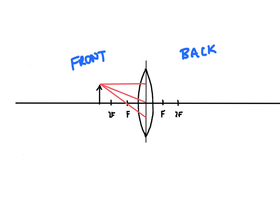With lenses we still want to think about real and virtual images. A real image means it can be projected onto a screen — I can hold a piece of paper in front of this lens and the light will project onto it. On the other side, if I held the paper there I wouldn't get an image to form because all the light is passing through. So that side gives us virtual images — we can see them with our eye but we can't project them onto a screen.